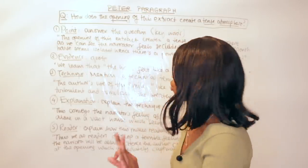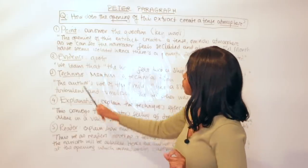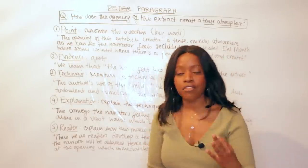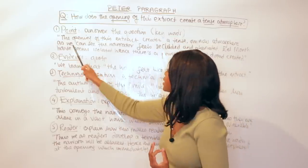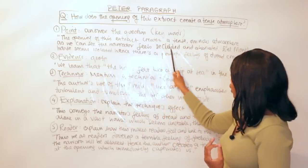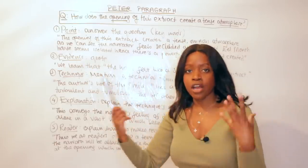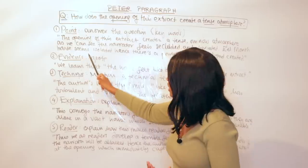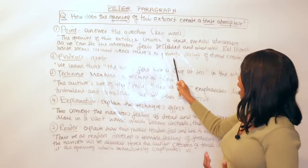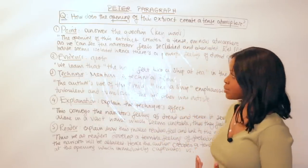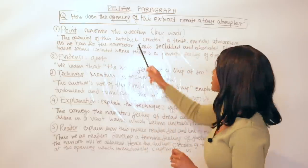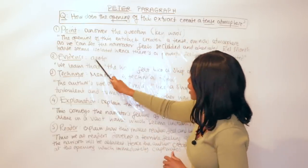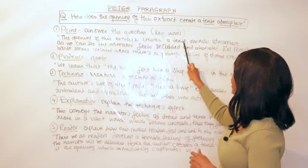So let's read through my example now. This is my opening Point: The opening of this extract creates a tense, ominous atmosphere—ominous means terrifying, scary—as we can see the narrator feels secluded and alienated. Secluded: alone. And alienated. Eel Marsh House seems isolated, hence there's a powerful feeling of dread created. Now in my opening Point, I have restated the keywords—the words 'opening,' 'tense,' and 'atmosphere' here.